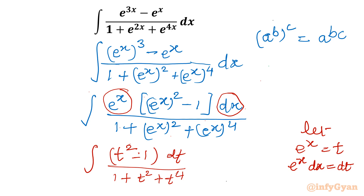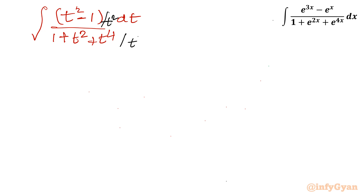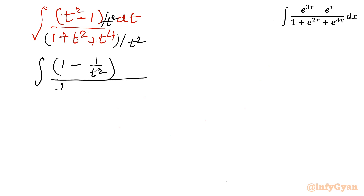Now again it looks very tedious. We have the integration (t² - 1) dt / (1 + t² + t^4). Let's divide both the numerator and the denominator by t².